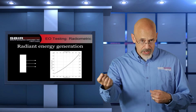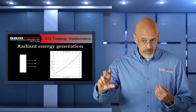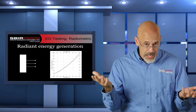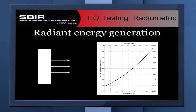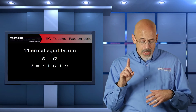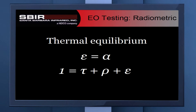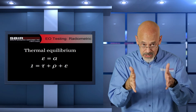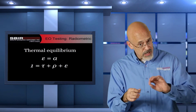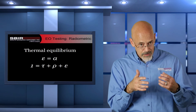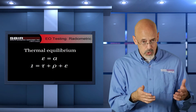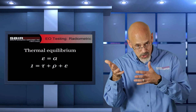When we talk about the source of energy, we're talking about an object whose temperature is above absolute zero. Any object above absolute zero will put out radiant energy, and the amount of energy it puts out is dependent on its temperature — the higher the temperature, the more energy that's put out. The idea of thermal equilibrium is that the amount of energy an object emits is equal to the amount it absorbs — that's why it's in thermal equilibrium, maintaining the same temperature. So we can update our formula so that one equals tau plus rho plus epsilon, or emissivity.